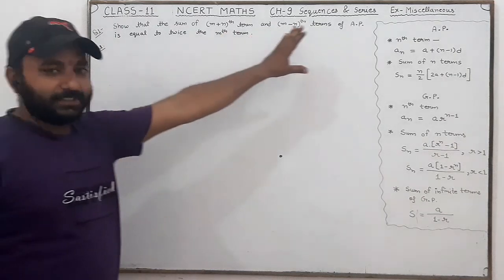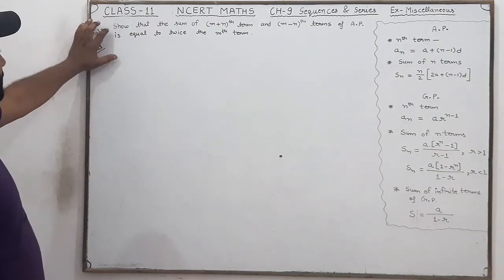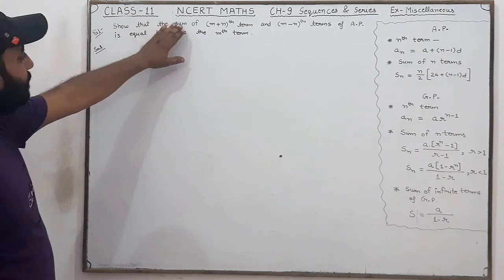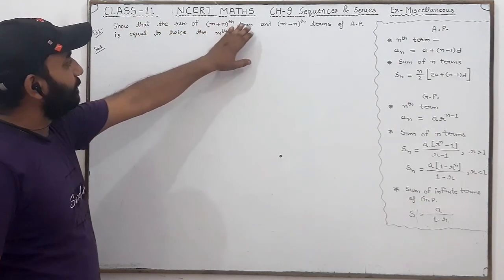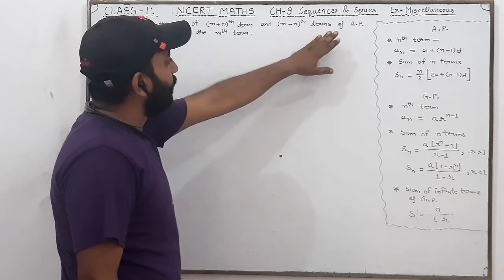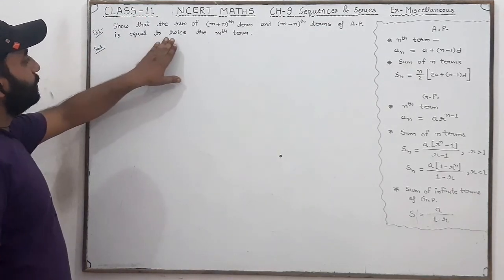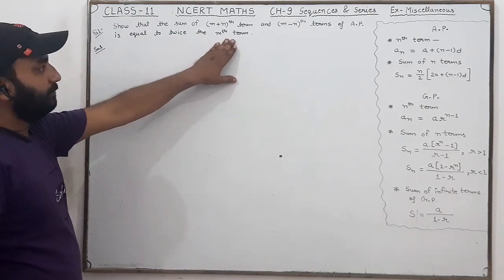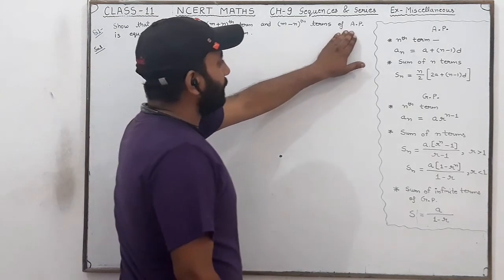We will start the exercise miscellaneous. Question number 1: we have to show that the sum of the (m+n)th term and (m-n)th term of an AP is equal to twice the mth term. We are talking about AP.